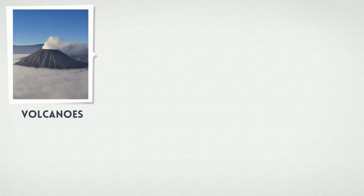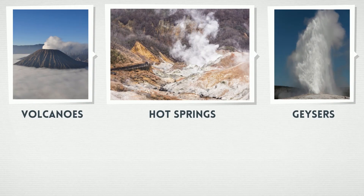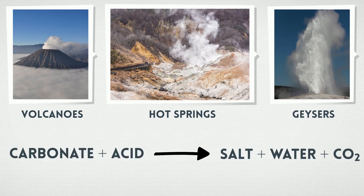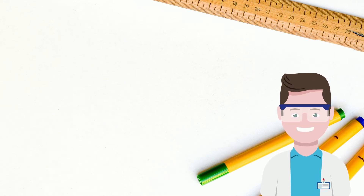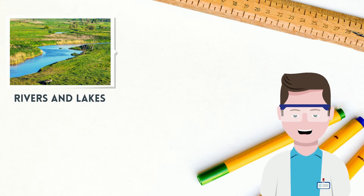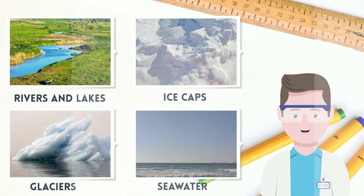Natural sources include volcanoes, hot springs, and geysers, and it is freed from carbonate rocks by dissolution in water and acids. Because carbon dioxide is soluble in water, it occurs naturally in groundwater, rivers and lakes, ice caps, glaciers, and seawater.